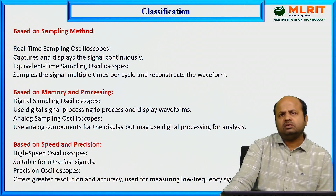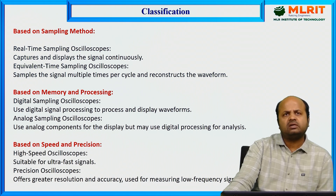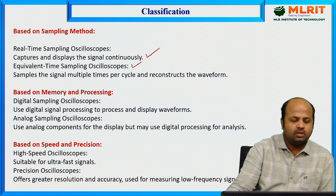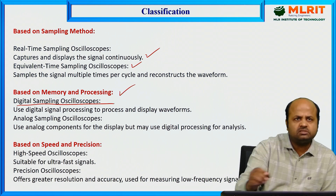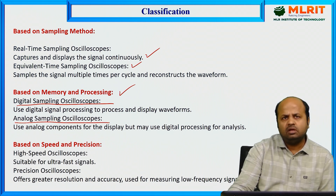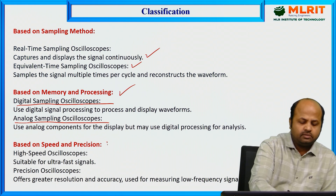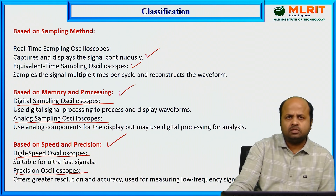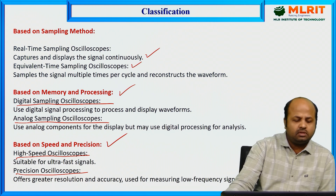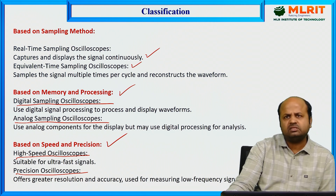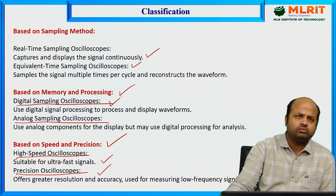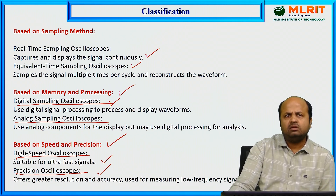Classification of sampling oscilloscopes: based on sampling method, we have real-time sampling oscilloscopes that capture and display the signal continuously, and equivalent-time oscilloscopes. Based on memory processing, we have digital sampling oscilloscopes and analog sampling oscilloscopes. Based on speed and precision, we have high-speed oscilloscopes and precision oscilloscopes. High-speed oscilloscopes are suitable for ultra-fast signals, while precision oscilloscopes offer good resolution and accuracy. For laboratory purposes, we can use the DSO.